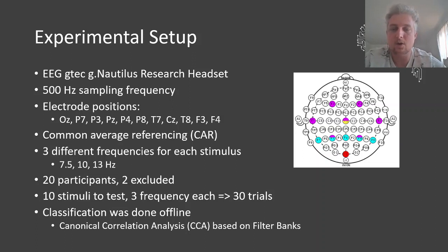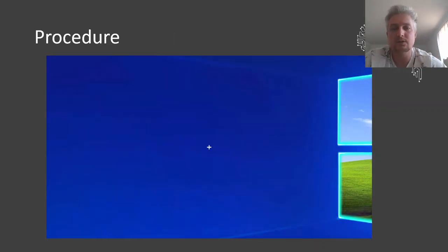The classification was done offline using canonical correlation analysis based on filter banks. The procedure looked as follows: first the target stimulus was randomly selected from all available stimuli and displayed in a random target frequency for five seconds.